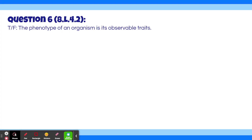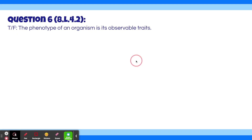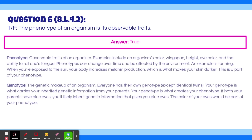Question 6. True or false: the phenotype of an organism is its observable traits? The answer is true. A phenotype is the observable traits of an organism. Examples include an organism's color, wingspan, height, eye color, and the ability to roll one's tongue. Phenotypes can change over time and be affected by the environment. An example is tanning — when you're exposed to the sun, your body increases melanin production, which makes your skin darker. This is a part of your phenotype.